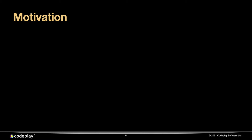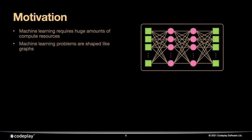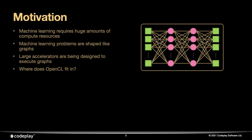Before we can answer that question, we need to understand why these accelerators exist. The short answer is machine learning. Machine learning requires a huge amount of compute resource and memory, and it so happens that a lot of the tasks machine learning needs to perform look like graphs. Here I've drawn a simple artificial neural network with input nodes, hidden nodes, and output nodes. Machine learning is hugely important to the industry, and because machine learning tasks look like complicated graph executions, hardware vendors are designing very large accelerators to accelerate these graph workloads. The question becomes: since OpenCL predates the machine learning revolution, where does OpenCL fit in with this picture?